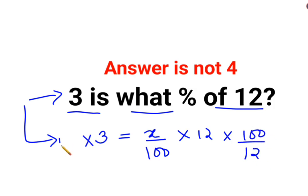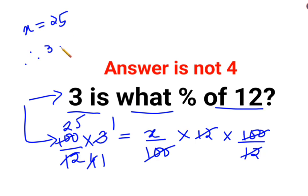So what happens in that case is we have gotten the variable on one side. Because all these 12 and 100 are cancelling and at this point we have 1s and 4s, 1s and 25s. So we can say therefore x is 25, which means 3 is 25% of 12.